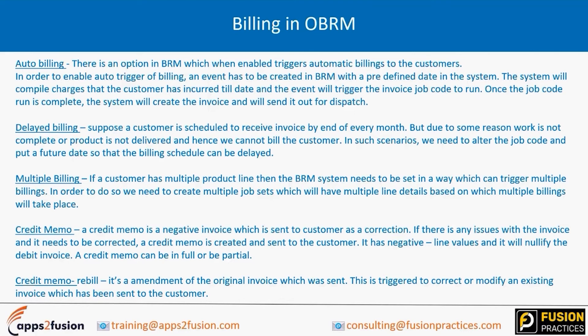A credit memo rebill is how an amendment is sent after a correction is made. For example, if an invoice was initially raised for 100 rupees and the customer said the name on the invoice is wrong, we first issue a credit memo for the same amount — since the amount hasn't changed, only the name needs amendment. Once the credit memo is passed, we make the name correction and then send out the fresh bill. These are known as credit memo rebills.